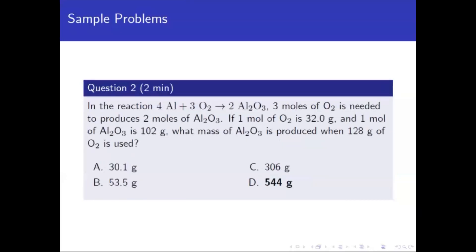Number two: in the reaction 4 aluminum plus 3 oxygen gives 2 aluminum oxide, this problem is really about dimensional analysis — converting from one quantity to another, from grams to moles and then from moles to grams. We have 3 moles of oxygen needed to produce 2 moles of Al2O3.